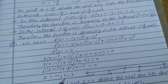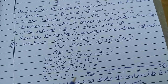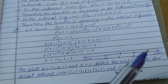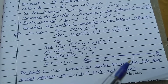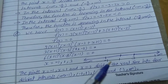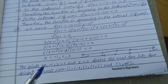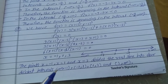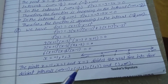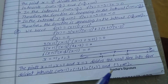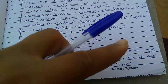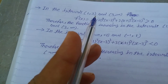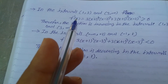The critical points are x = -1, x = 1, and x = 3. These three points divide the real line into four disjoint intervals: (-∞, -1), (-1, 1), (1, 3), and (3, +∞). In the intervals (1, 3) and (3, +∞), f'(x) is analyzed to determine where the function is increasing or decreasing.